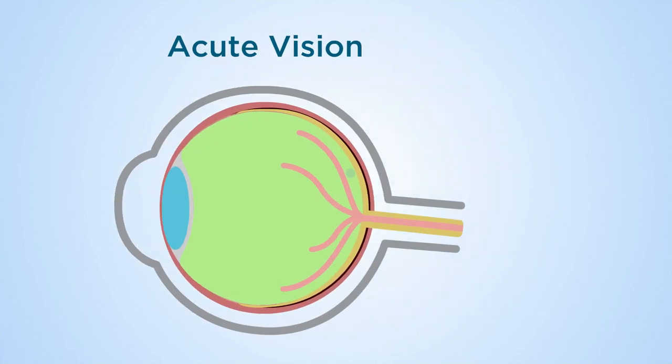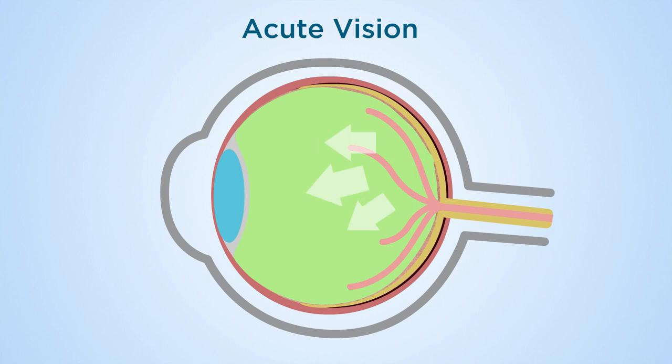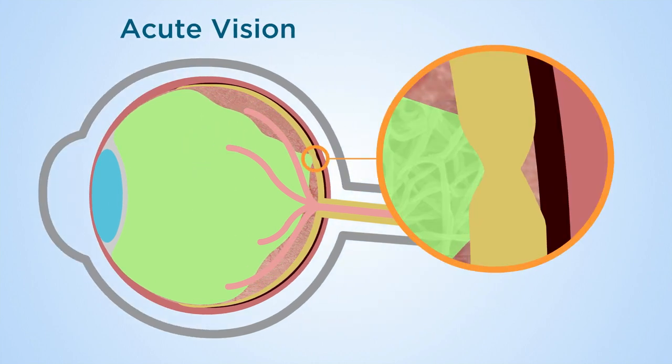Macular holes are holes in the part of the retina responsible for reading vision. Tangential and antiposterior traction of the posterior vitreous on the retinal surface creates a hole in the central retina.